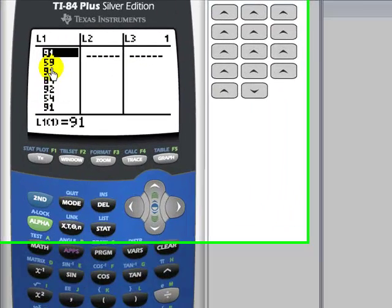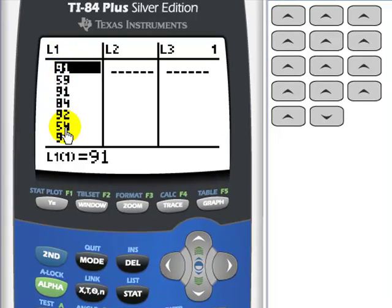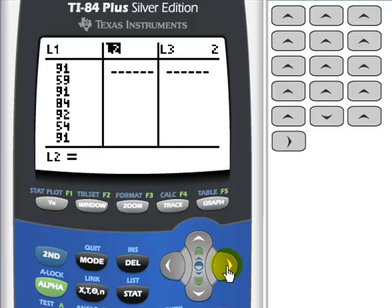I'm going to sort this data, but I don't want to sort it in this position. I want to move all my data from L1 to L2. The easiest way to do that is to go up and to the right and press the Enter button.